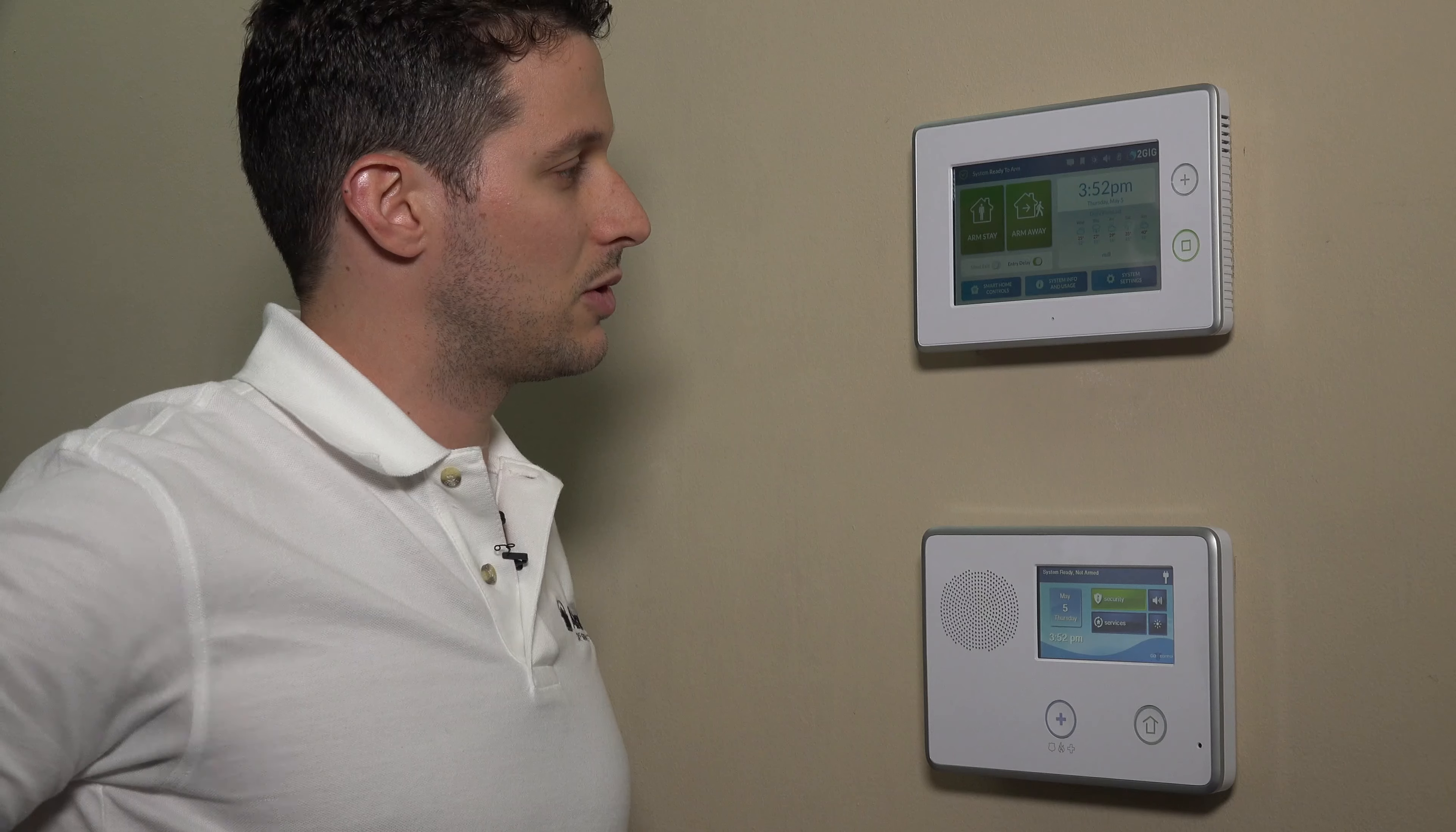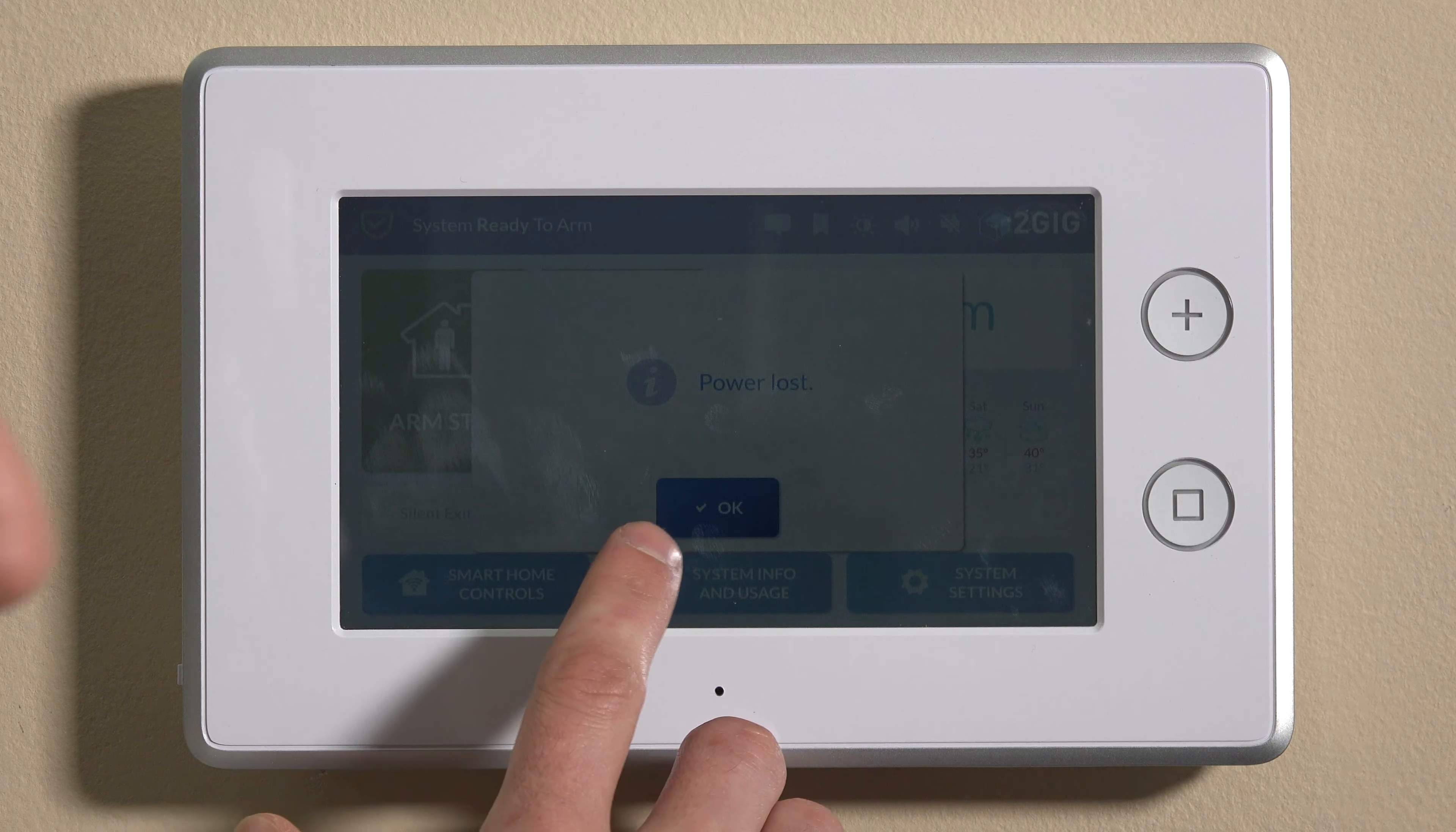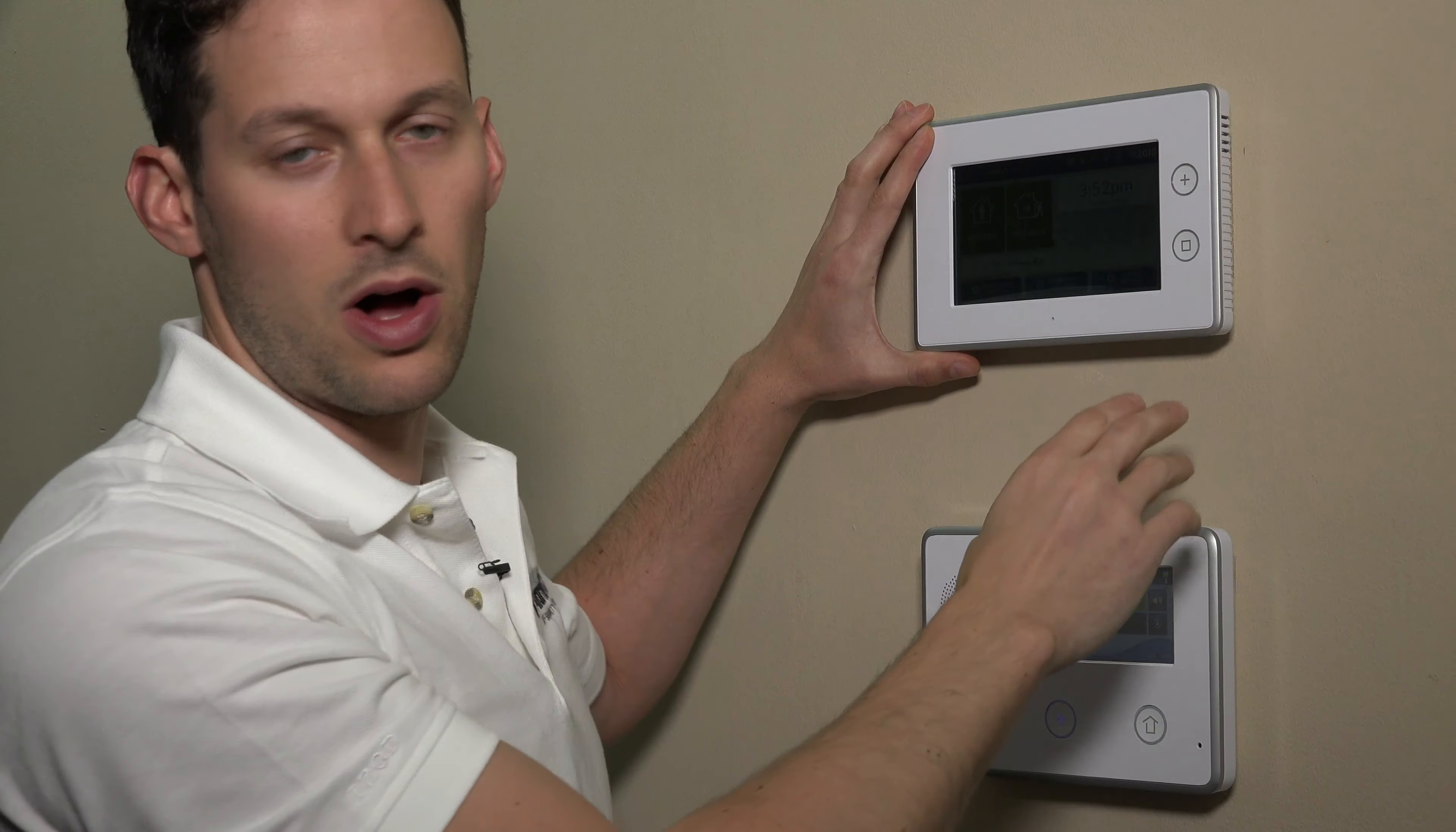So we'll put down our radio for the moment. And what I'd like to do is first, I will remove AC power by disconnecting our transformer from the wall, which I'll do below here. You'll see that it says power lost on the screen. We can click OK. And then we'll go ahead and remove the panel from the wall.